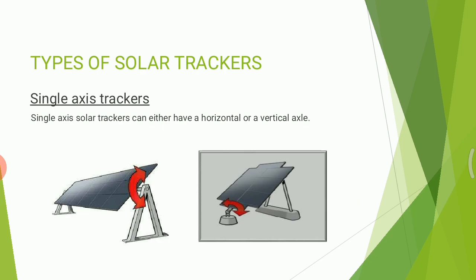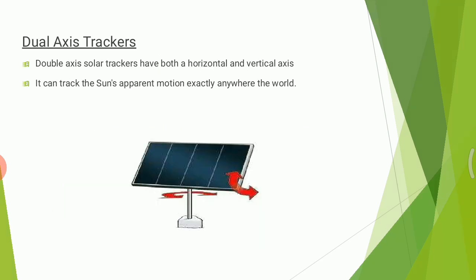Types of solar trackers: there are two types — single axis solar tracker and double axis solar tracker. The single axis solar tracker rotates in one direction, that is either the horizontal or the vertical axis. It can rotate on any one of those axes.